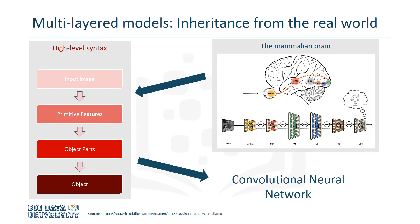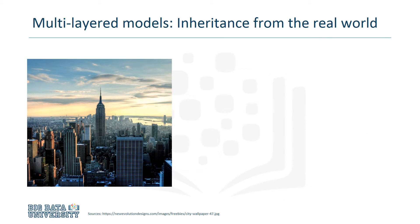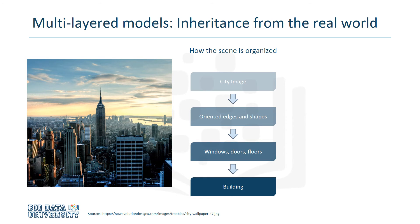Let's walk through this process with a real-world example to get a better idea of how this all works. Take a look at this image here. Let's say we wanted a network to be able to recognize one of the buildings. It first helps to carefully consider how the scene is organized. At the highest level, we simply have an image of the city. But we can start to extract oriented edges, we can join them to form doors and windows, and then put those parts together to form a building.